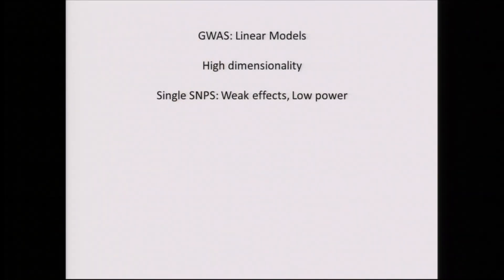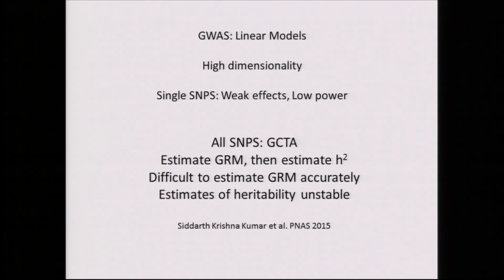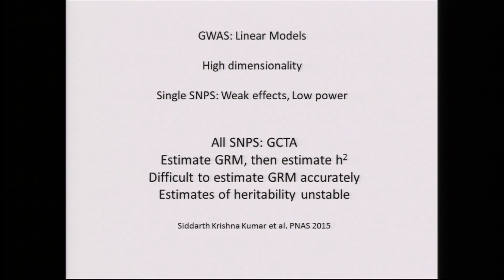You could try to use GWAS, which uses linear models but suffers from problems of high dimensionality. You can try GCTA, which uses all SNPs together. With my colleague Sid, we've demonstrated analytically and by simulations that it's difficult to accurately estimate a genetic relatedness matrix the way this procedure defines it — using all SNPs together at one go — and the estimates you get are unstable.